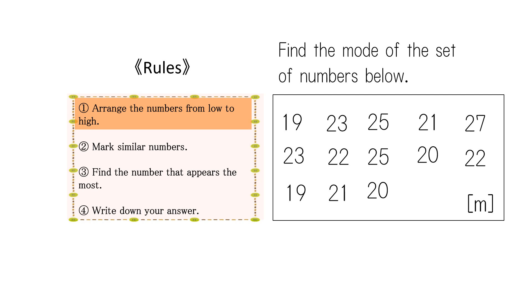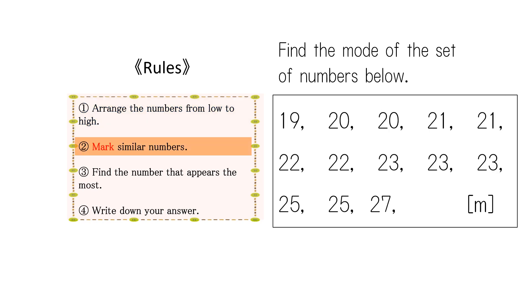First, start by arranging the numbers from low to high. Next, make it easier to count the same numbers. Do this by marking them with the same symbols to make them easier to see.